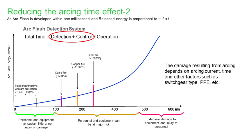Now we can look at the effect of time. As time increases, energy — which is approximately proportional to I²T — increases. After almost 100 milliseconds, cable will catch fire. With more time, copper will catch fire, and finally steel will catch fire. The amount of damage from arcing depends on current, time, type of switchgear, distance, and PPE used. If we are capable of removing the arc within 100 milliseconds, personal and equipment damage will be minimal. Longer times cause more damage. If we sustain more than 500 milliseconds, it will definitely result in expensive damage to personnel and equipment.